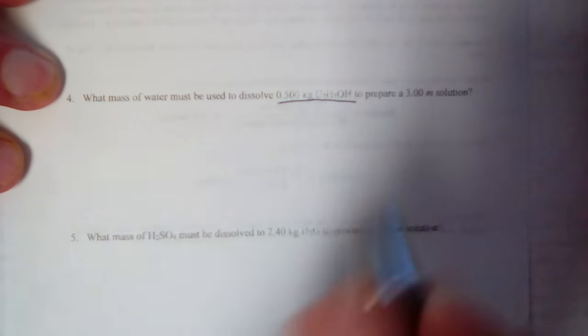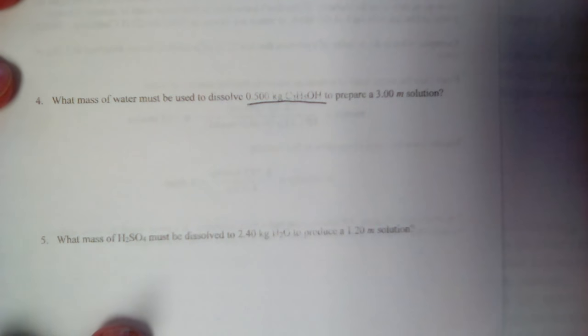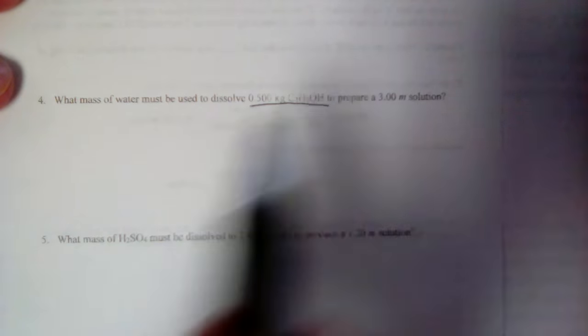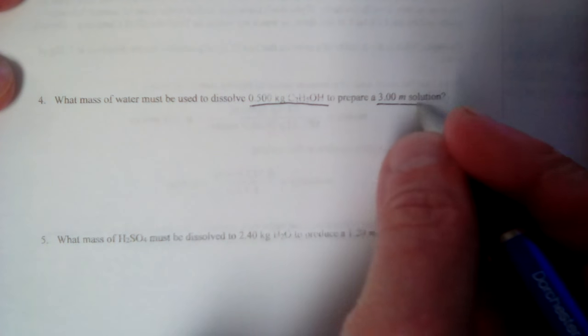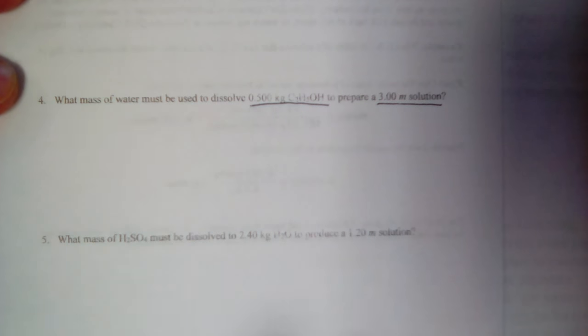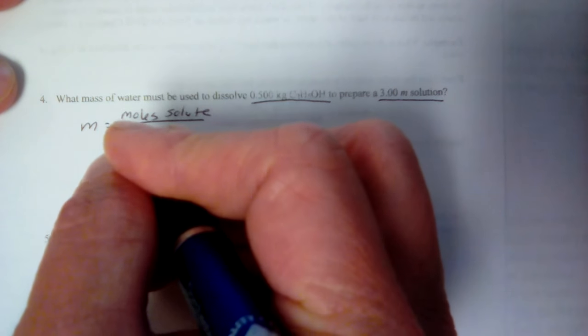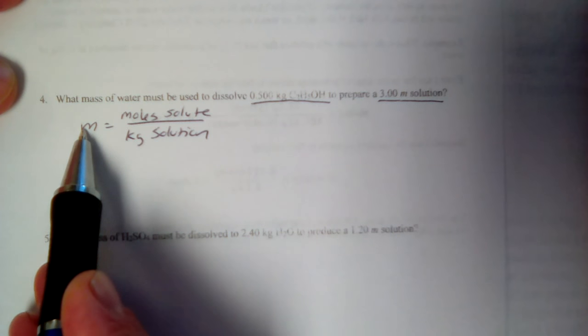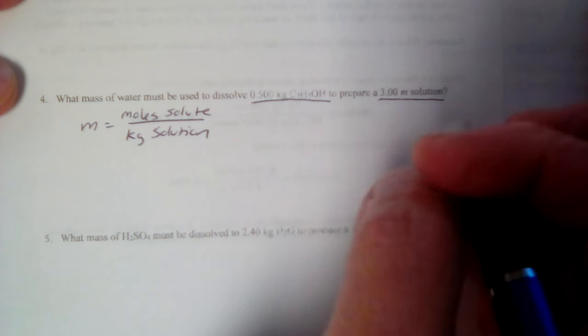So what have we got here? We've got 0.5 kilograms of C2H5OH. I've given you this kilograms of what is probably going to be our solute. It does say dissolved, so that is the solute. And I've given you three molar solution. I've already given you molality. So this, we're going to do a little algebra with. Molality is equal to moles of solute over kilograms solution. I've got that number. I want to figure out that number. Mass of water. I'm going to have to convert this to moles first to get that done. So let's do that. Let's find the formula mass first.